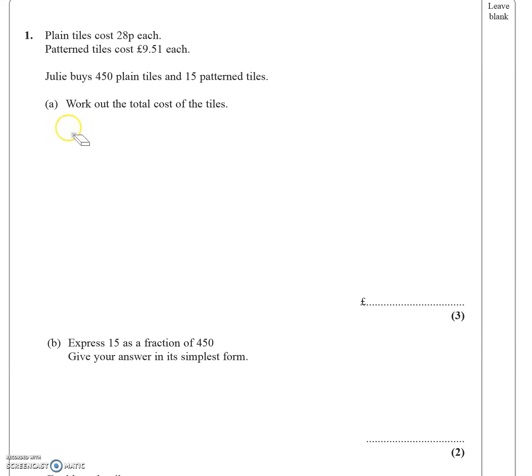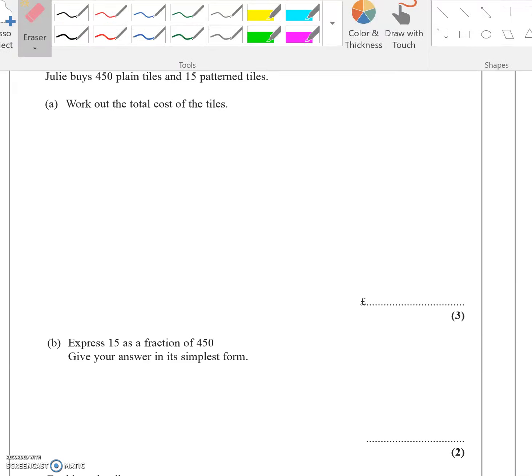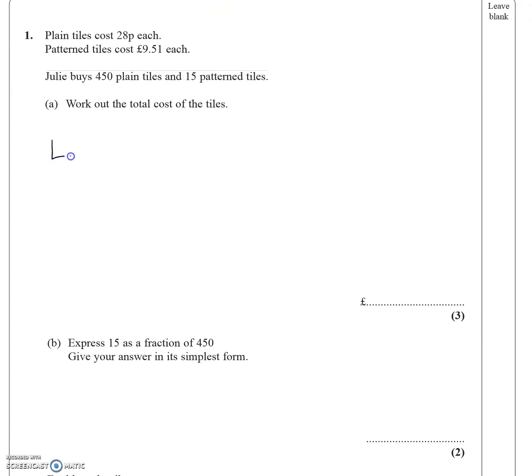So if she's buying 450 plain tiles, then we're simply going to do 450 multiplied by how much a plain tile costs, which is 28p, 0.28.